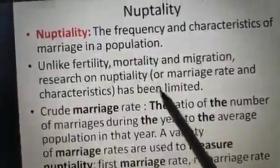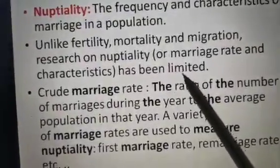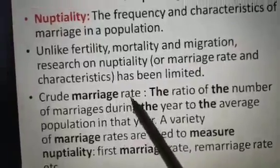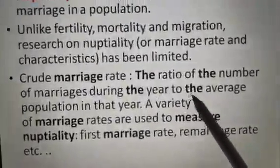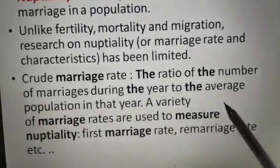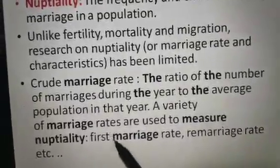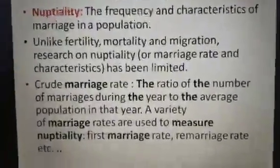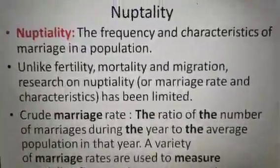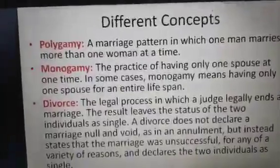Unlike fertility, mortality, and migration, research on Nuptiality — or we can say marriage rate and its characteristics — has been limited. There is the term Crude Marriage Rate. The Crude Marriage Rate is the ratio of the number of marriages during the year to the average population in that year. A variety of marriage rates are used to measure Nuptiality. First marriage rate and re-marriage rate are also terminologies within that.